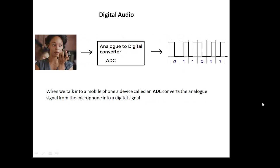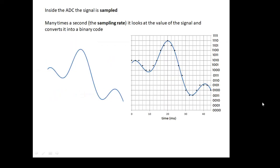Now, digital to audio, radio, when we talk into a mobile phone, well, that's an analog signal which has to be changed into a digital one. And there's a device called an ADC, an analog to digital converter, which does that. It converts an analog signal from the microphone into a digital signal. And the process is called sampling. What happens inside the ADC is something called sampling.